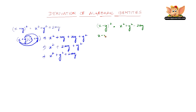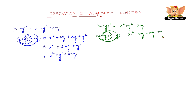x minus y the whole square is nothing but x minus y into x minus y. Which is x into x is x square, plus x into negative y which is minus xy, plus negative y into x which is minus xy again, and then minus y into minus y is plus y square. So we have x square minus xy minus xy, which is minus 2xy, plus y square. This can be written as x square minus 2xy plus y square, or x square plus y square minus 2xy.